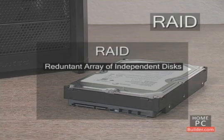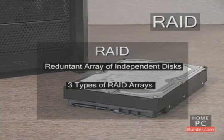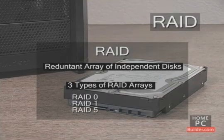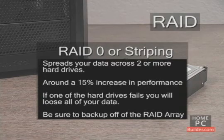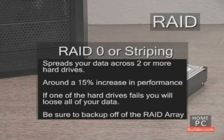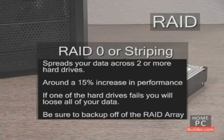There's also a feature on most motherboards called RAID. RAID allows you to connect two or more hard drives together so they show up as one drive in Windows. There are three kinds of RAID arrays: RAID 0, 1, and 5. RAID 0, sometimes called striping, spreads the data across two or more hard drives, giving you around a 15% increase in performance. The downside is that if just one drive in the array fails, you will lose all of your data — even on the drives still working — because a portion was on the failed drive. If you use RAID 0, make sure you have your important data backed up off of the array.